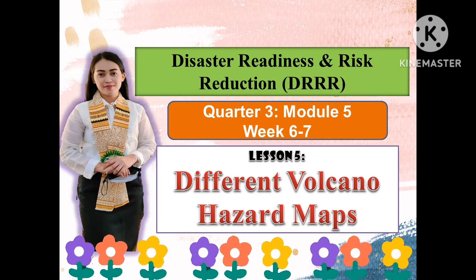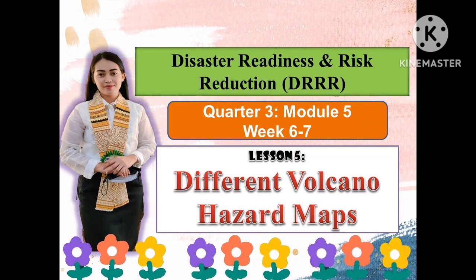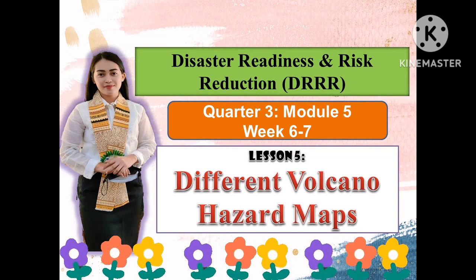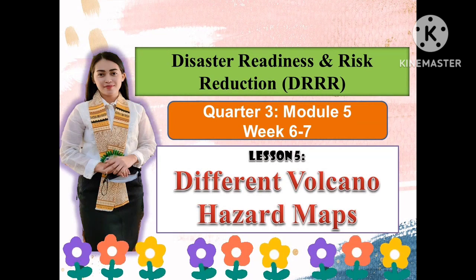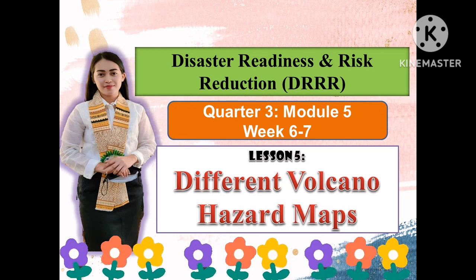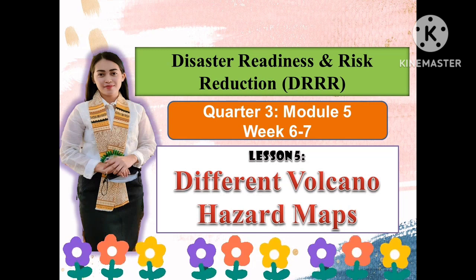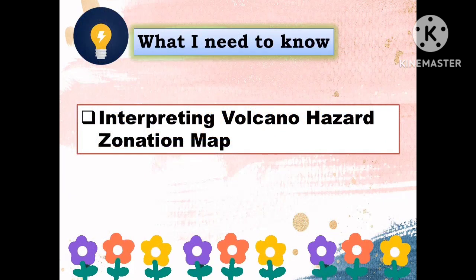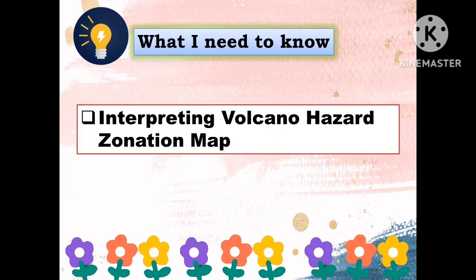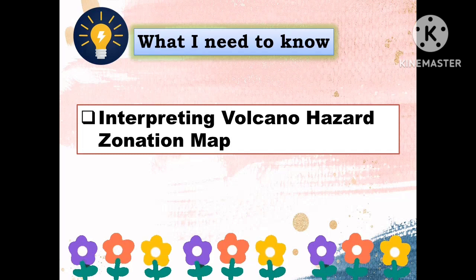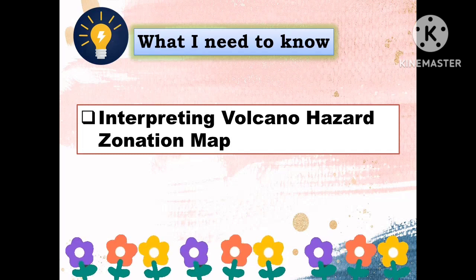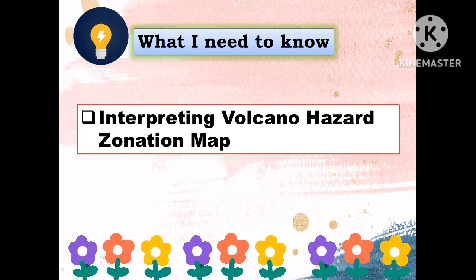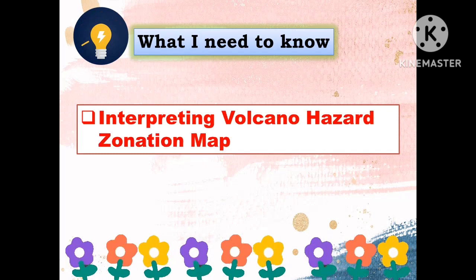This will be the third quarter topic and Module number 5. The objective of this lesson is interpreting Volcano Hazard's Zonation Map.